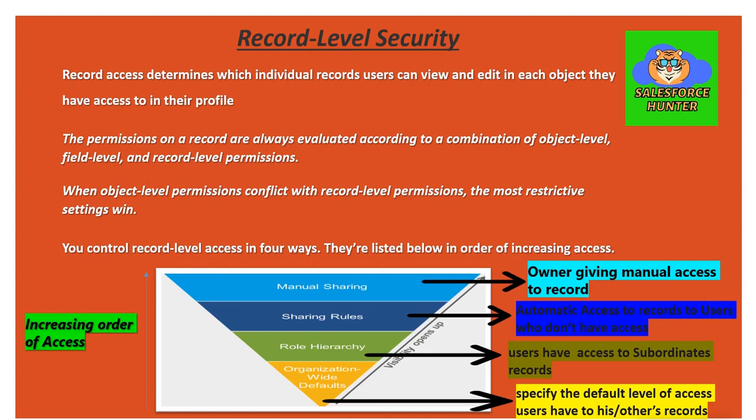Now let's talk about the ways to give record level access, listed in increasing order of access. First is Organization-Wide Defaults, generally known as OWD, which specifies the default level of access users have to their own or others' records — basically what is the default permission a user has on a record.